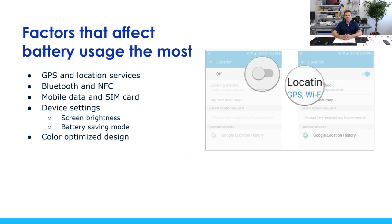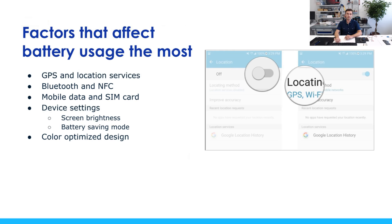When we talk about software development, we often recommend color-optimized design. If we use a design with a light background or white colors, it consumes more battery as it brightens the display more. So it is recommended to use a darker screen instead. These are just some factors, but they are the most noticeable ones which affect battery life.